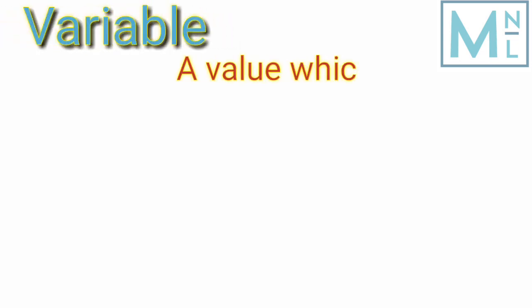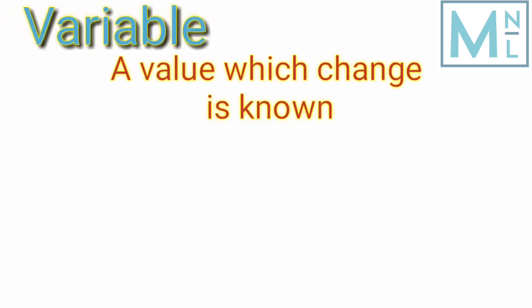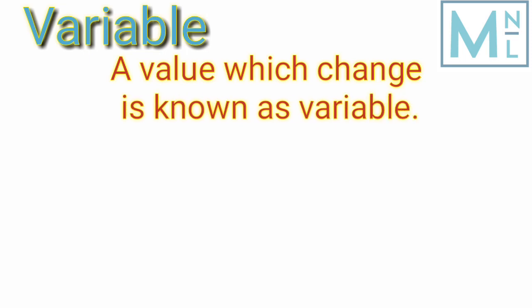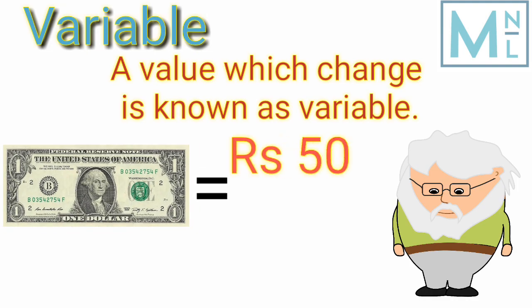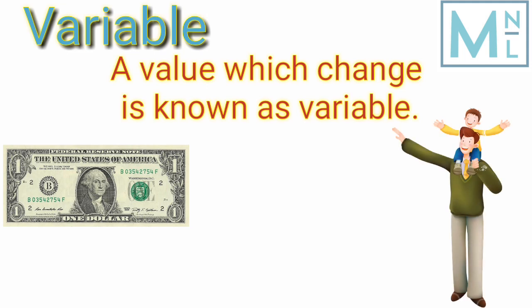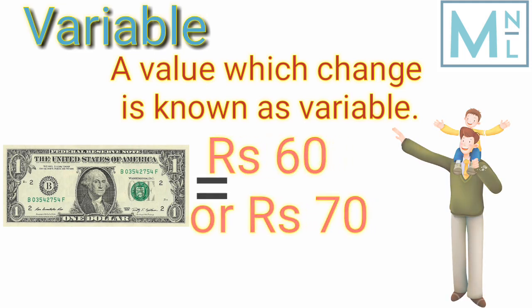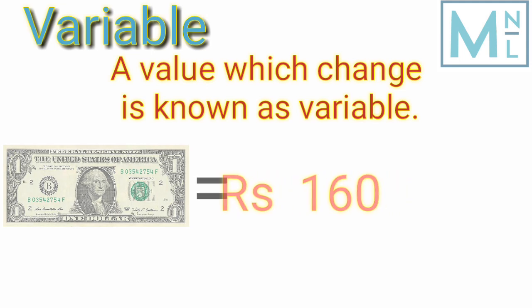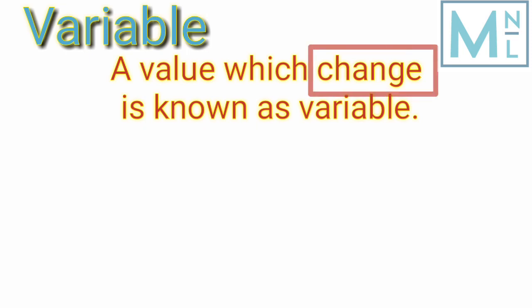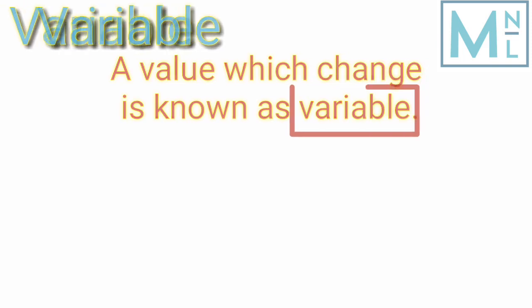A value which changes is known as a variable. ऐसी value जो change हो जाए — for example, the value of the dollar in your grandfather's time was around 50 or 40 Pakistani rupees, in your father's time it was 60 or 70 rupees, and today the dollar's value keeps changing according to time. So such a quantity or value that changes is called a variable.